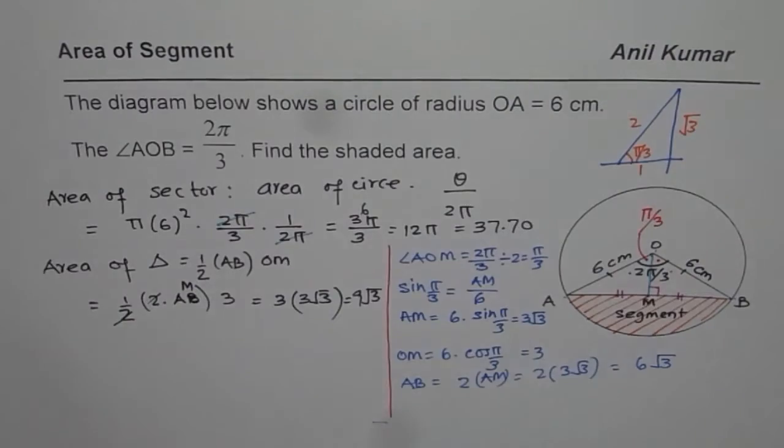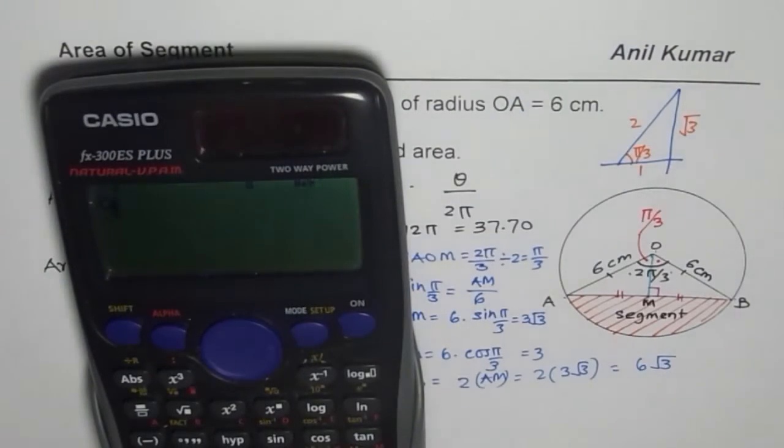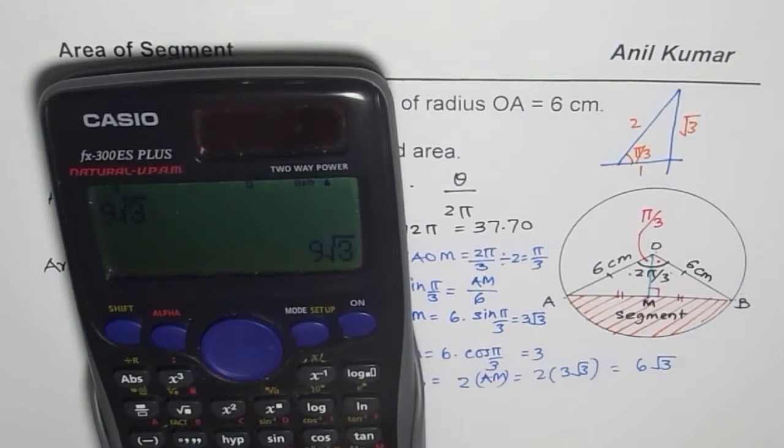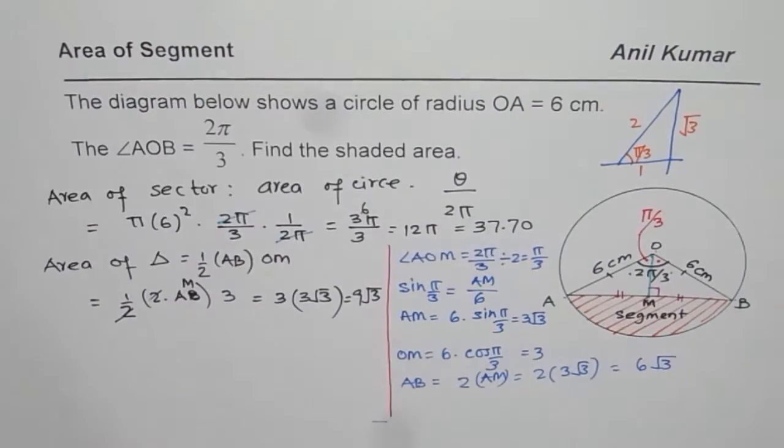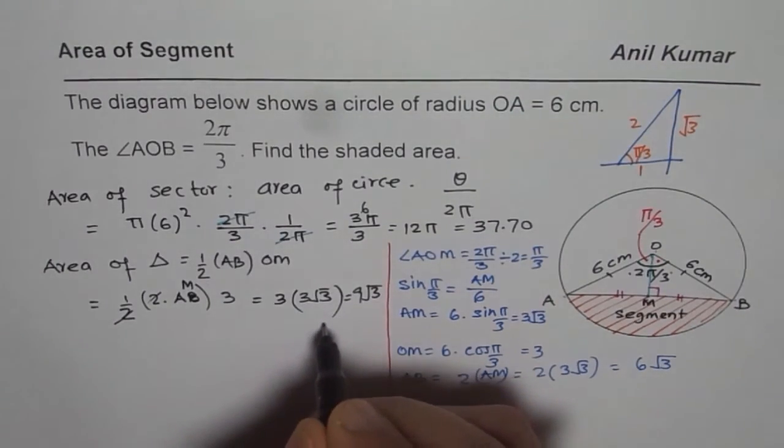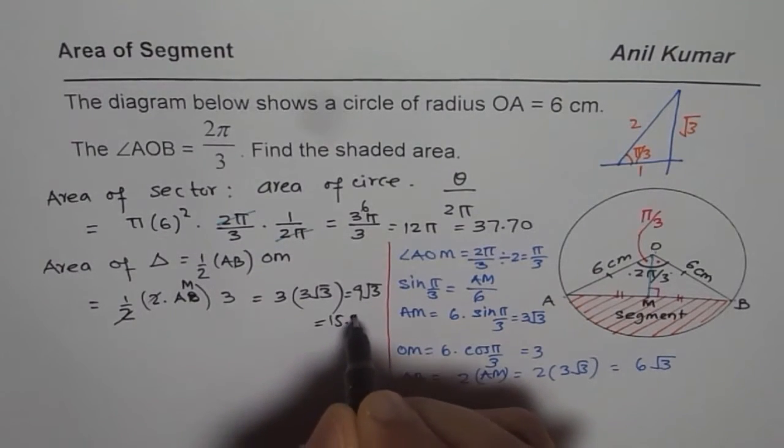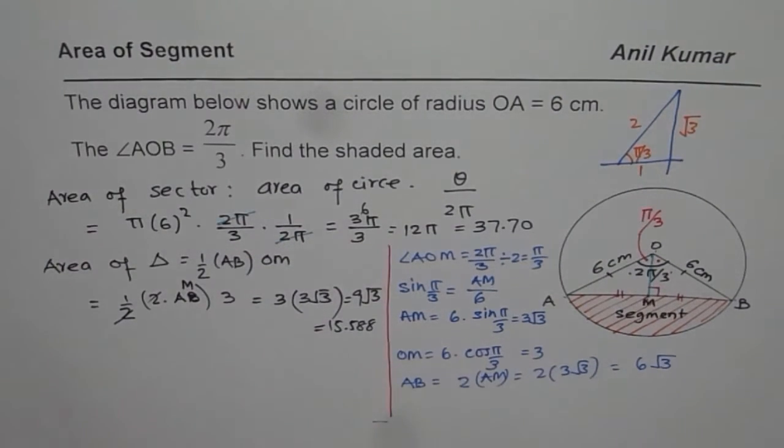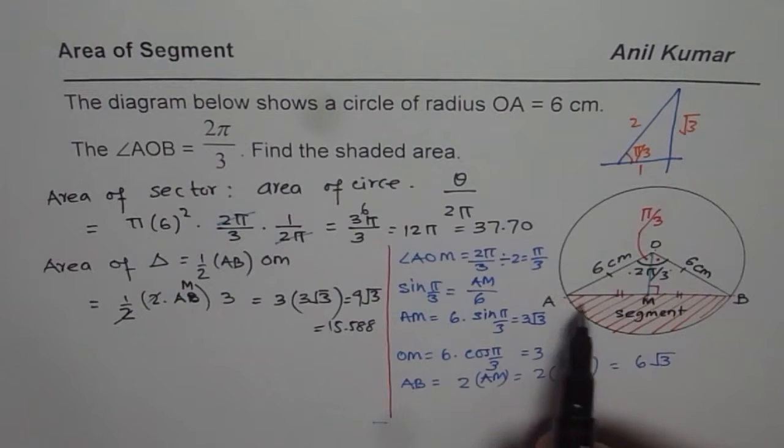Let's calculate the decimal value. So we have 9 times square root 3 which is in decimals 15.588. So now we can find what is the area of the segment.